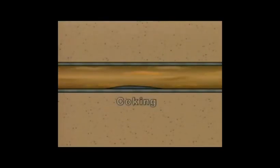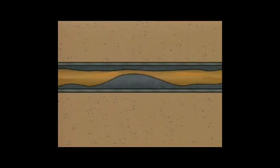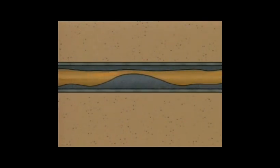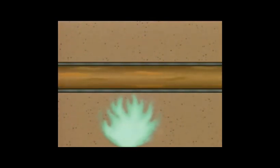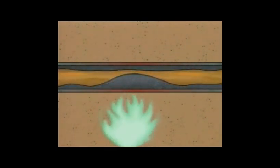One problem that can occur is coking — the accumulation of carbon deposits on the inside walls of tubes. Crude oil and some process fluids leave carbon deposits as they are heated and flow through the tubes. Coking reduces the inside diameter of tubes, restricts fluid flow, and reduces heat transfer by insulating the tube walls. If not corrected, the tube could overheat, weaken, and eventually rupture. Coking can also develop when burner flames contact the tubes — a problem called impingement — which creates hot spots and carbon deposits that can also lead to tube rupture.